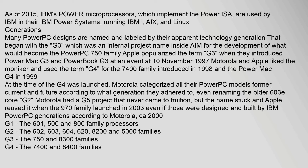Apple popularized the term G3 when they introduced the Power Mac G3 and PowerBook G3 on November 10, 1997. Motorola and Apple used the term G4 for the 7400 family introduced in 1998 and the Power Mac G4 in 1999. At the time the G4 was launched, Motorola categorized all their PowerPC models — former, current, and future — according to what generation they adhered to, even renaming the older 603e core. Motorola had a G5 project that never came to fruition, but the name stuck, and Apple reused it when the 970 family launched in 2003, even though those were designed and built by IBM.